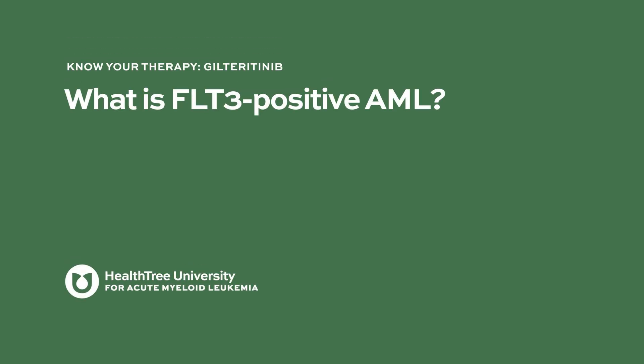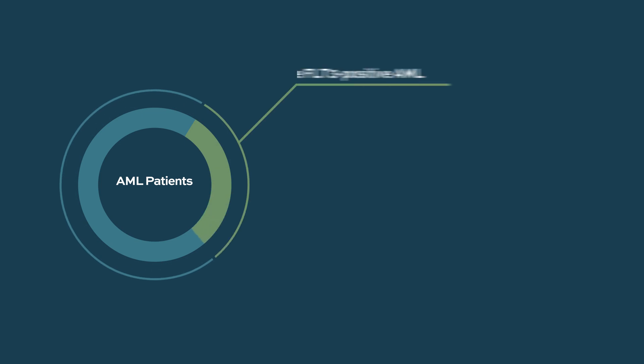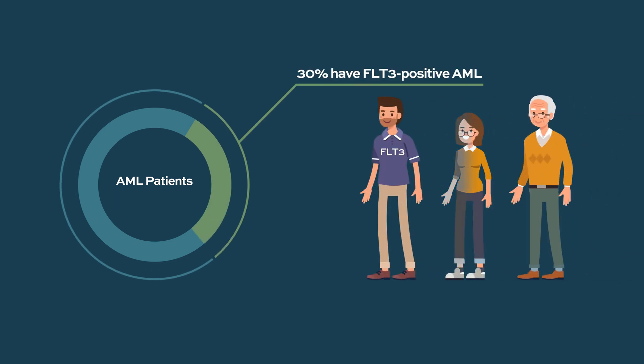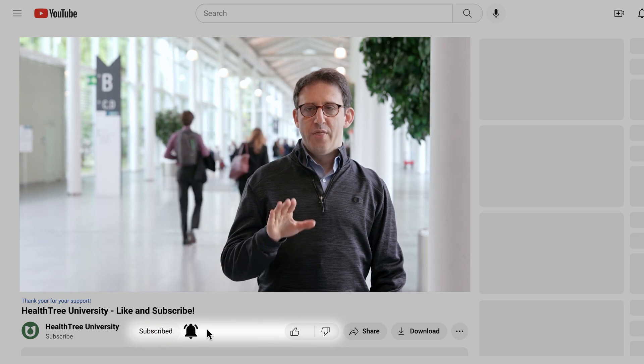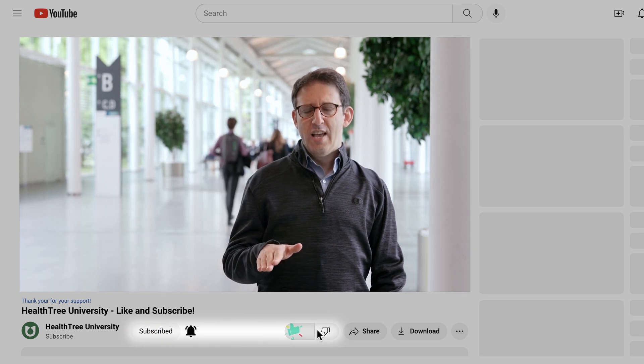FLT3-positive AML is AML where the patient's disease has a mutation in FLT3. FLT3 mutations are found in about 30% of patients with acute myeloid leukemia. The reason it's important to know if you have a FLT3 mutation is because there are specific targeted therapies that can target the FLT3 mutation, and that can potentially lead to improved outcomes if you have this particular mutation.